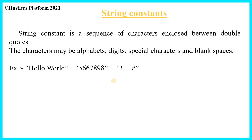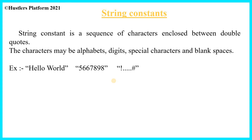The second type of character constant is string constant. A string constant is a sequence of characters enclosed between double quotes. Characters may be alphabets, special characters, and blank spaces. Examples: "Hello World", "1234567890", "?.....#@123" — all are string constants. It can contain special symbols, alphabets, alphanumerics, digits, and blank spaces. For example, "Hello World" consists of 10 visible letters but actually 11 characters because it also includes the blank space.